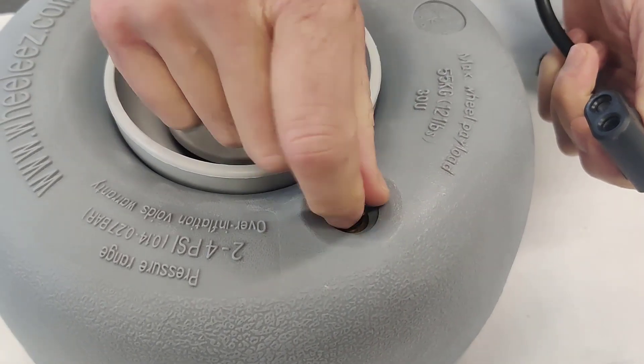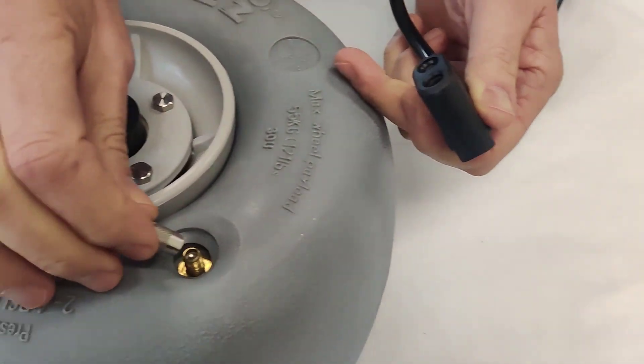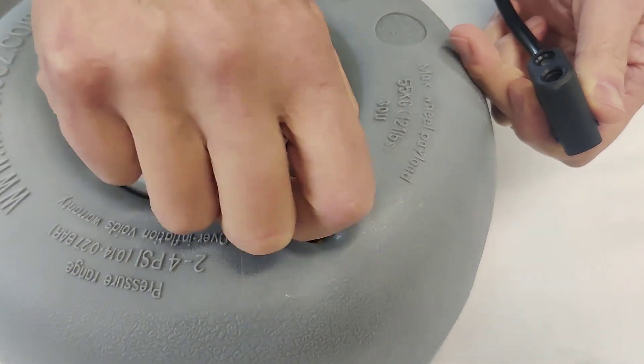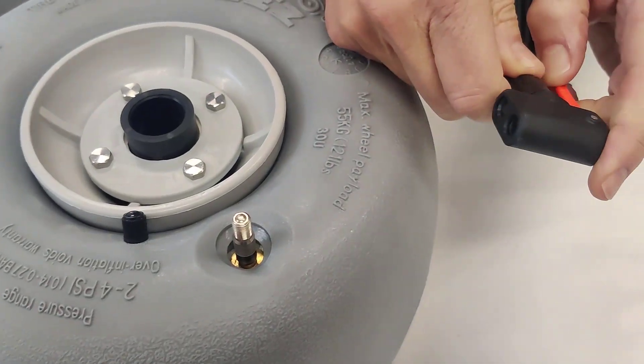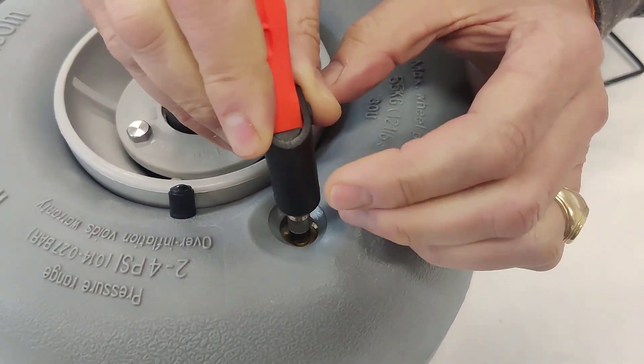So what we'll do is take the air cap off and then we'll screw the extender onto the valve, which will enable us to secure the air chuck to the valve without any problem.